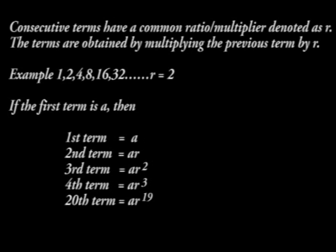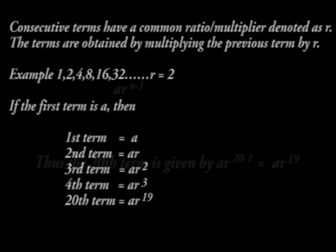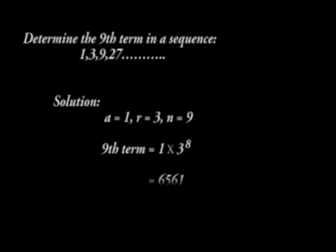Note that the power of R is 1 less the position of the specific term in the sequence. If N is the position of the terms, then the geometric sequence is governed by the relationship A R raised to power N minus 1. For example, determine the 9th term in a sequence, 1, 3, 9, 27. A is equal to 1, R is equal to 3, and N is equal to 9. The 9th term is given by 1 times 3 raised to power 8.